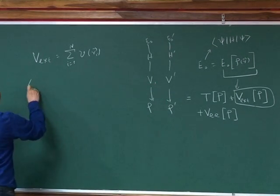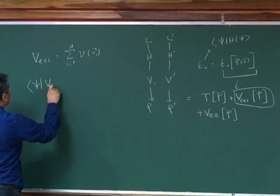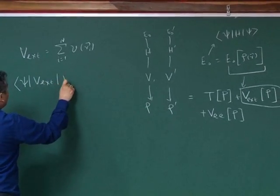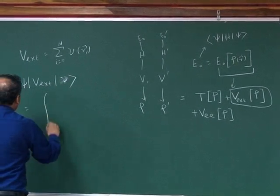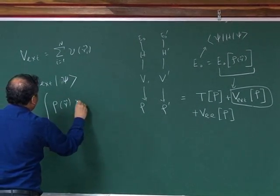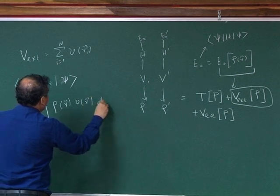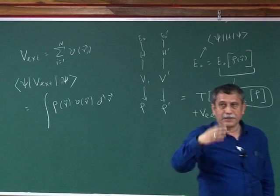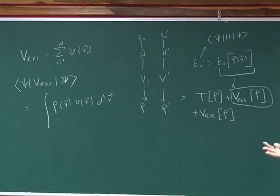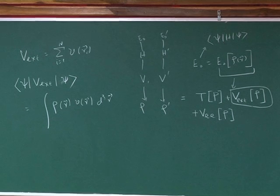Then, my wave function, the energy, psi of v external, psi, sorry, psi, can be written very easily as integral rho of r, v of r, d of r, d of r, d of r or d cube of r. It doesn't matter. It's a three-dimensional volume. This is very easy to show. I showed that yesterday.